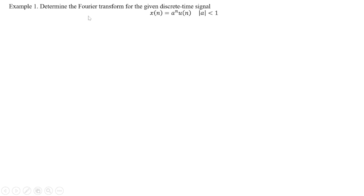Example 1: We will find the discrete time Fourier transform of the given signal x(n) = a^n · u(n), where the modulus of a is less than 1. This is the discrete time Fourier transform problem.